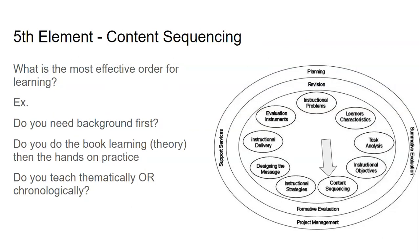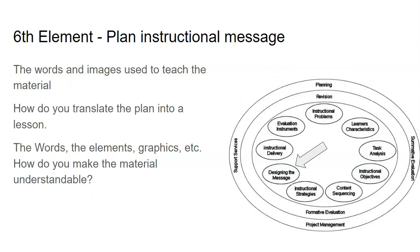We have content sequencing — what is the most effective order for learning? Looking at all the material, is there background or context to cover first? Is there theory before hands-on application? Do you teach things thematically or chronologically? Essentially, sitting down with your team to figure out what order things should be taught so it's easiest for the learner. Then there's the instructional message — what words and images will be used to teach the material? How do you translate the plan into the lesson, using the right words, elements, and graphics to make it understandable?